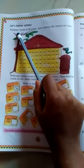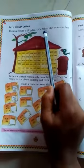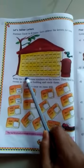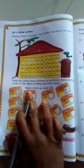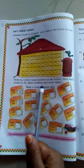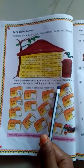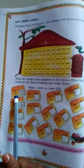Let's deliver letters. Postman uncle is ill today. Let's deliver the letters for him. Write the correct room number on the letter. Then find the room in the above building and circle them. Look at the first example.